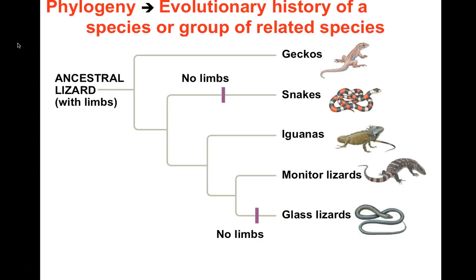Phylogeny is the evolutionary history of a species or group of related species. If you look at all these creatures, there is an ancestor somewhere where that tree begins to branch. That is the ancestor, and from that ancestor several lineages diverge — just like from your grandparents came your aunties and uncles as the family diversified.